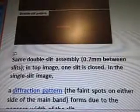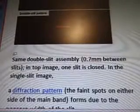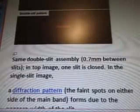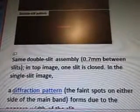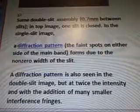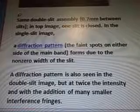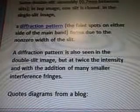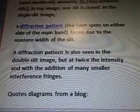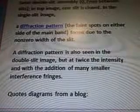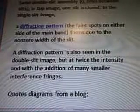Here's a single slit pattern and there's a double slit pattern. Same double slit assembly, 0.7 mm between slits. In the top image one slit is closed in the single slit image. A diffraction pattern — the faint spots on either side of the main band — forms due to the non-zero width of the slit. A diffraction pattern is also seen in the double slit image, but at twice the intensity and with the addition of many smaller interference fringes.